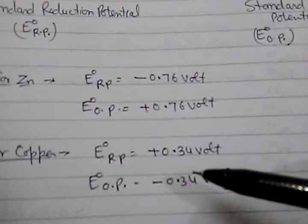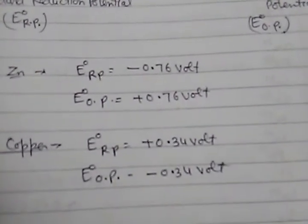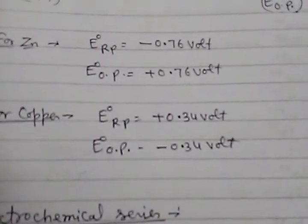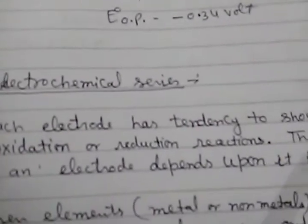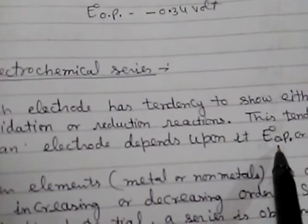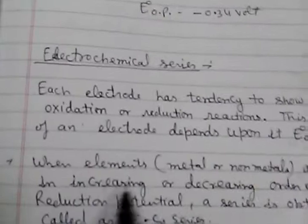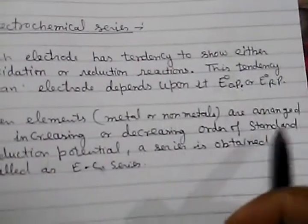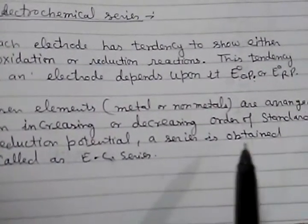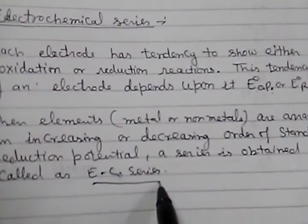IUPAC has decided to use standard reduction potential as the standard measurement. On this basis, the electrochemical series is obtained, because each electrode has a tendency to show either oxidation or reduction reaction. When elements — metals or non-metals — are arranged in increasing or decreasing order of standard reduction potential, this is called the electrochemical series.